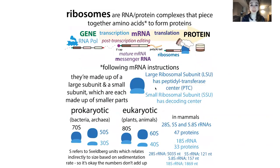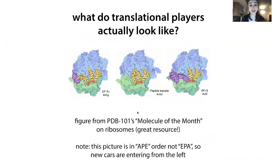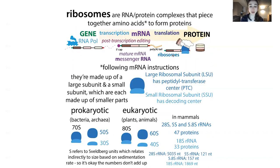The actual site where that transfer is happening is in the large ribosomal subunit. But that doesn't mean the small subunit's not important — the small subunit has the decoding center. This is where the tRNA is going to bind to the messenger RNA, and if it's a match, it's going to get added.